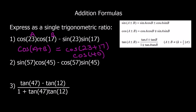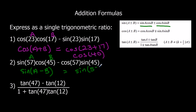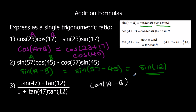For the second one, we've got sin cos and cos sin, so that's sin(A ± B). We've got a minus in the middle, so we're using the bottom signs — it's sin(A − B). A is 57 and B is 45, so that's sin(57 − 45), which is sin 12. And finally, we've got tan. It's the tan formula, using the bottom signs, so that's tan(A − B). A is 47 and B is 12, so we've got tan(47 − 12) = tan 35.